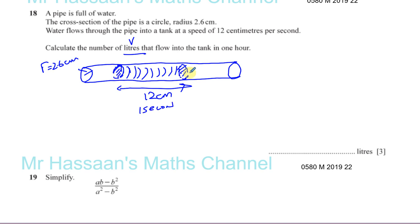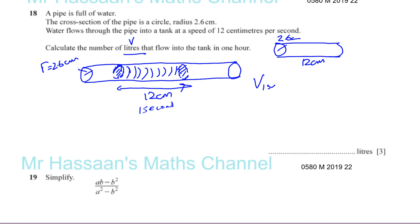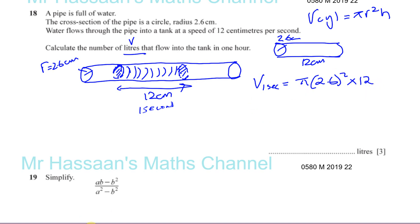That's just a one-second snapshot of the pipe. We need to find the volume of water flowing in one second, because liters is a volume. So we need to find the volume of the cylinder — 12 centimeters long with a radius of 2.6 centimeters. The volume flowing through the pipe per second is given by pi r squared times h, which is the area of the circular cross section times the length.